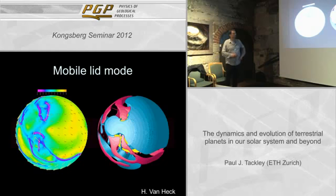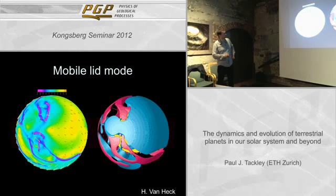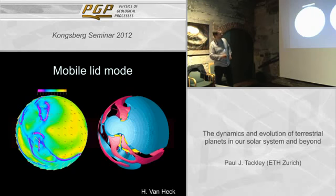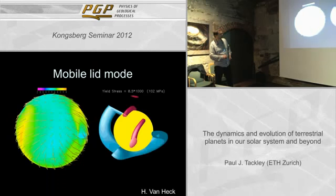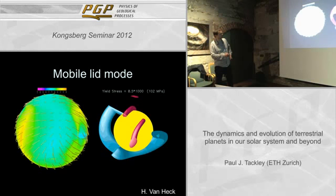This is an example of the mobile lid mode, sort of like plate tectonics but not exactly. Blue is cold, so we're seeing slabs going down and cold parts of the lithosphere; red is hot, so spreading centers are visible. Here's another example that's a bit easier to interpret: yellow is strong and blue/purple is weak, so these are the plate boundaries and these are the plates. Comparing with the temperature, this is a spreading center and that is a subduction zone. It's quite time-dependent.